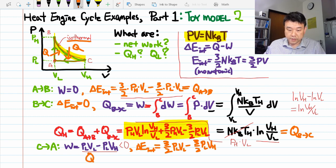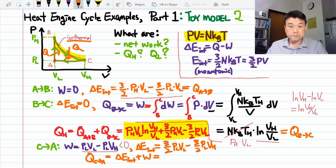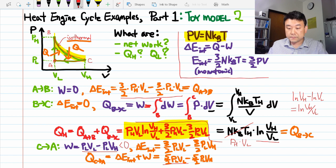So, the heat transfer is calculated using first law of thermodynamics. Change in internal energy plus the work done is equal to five halves PLVL minus five halves PLVH. Staring at this for a bit, you can see that this is negative.